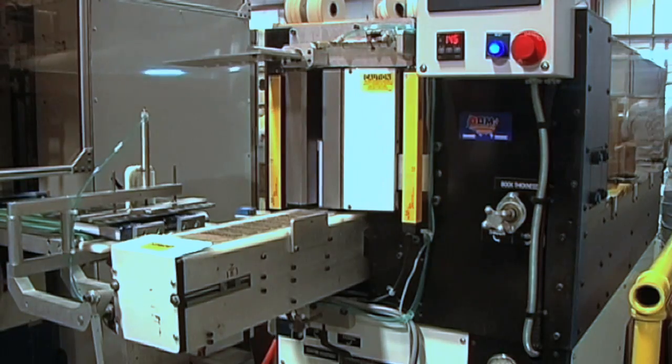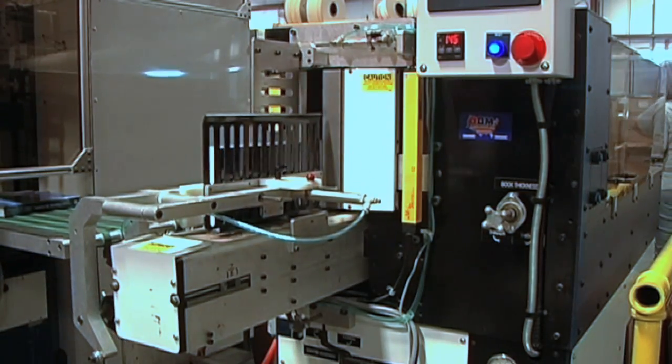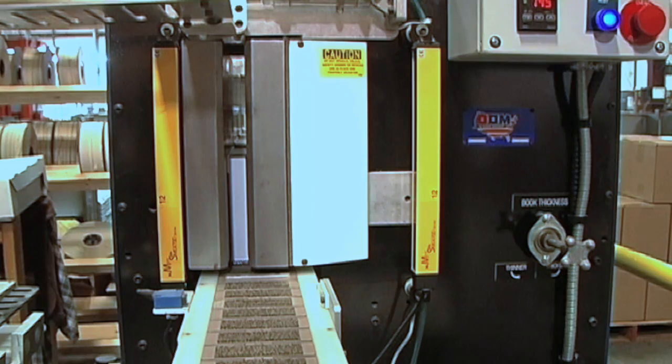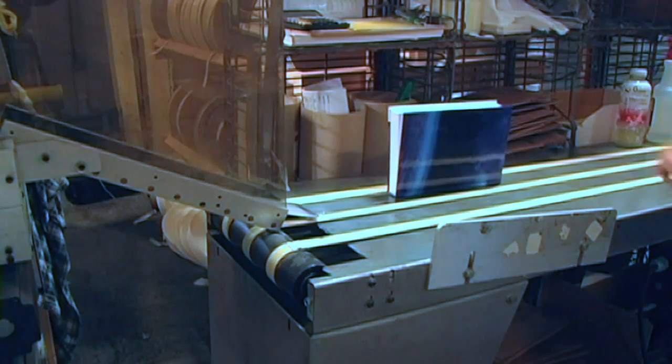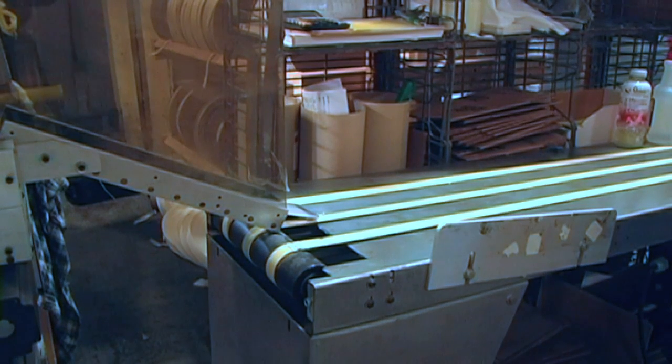Each book travels down a conveyor to the Smashing Station, where 1500 pounds of pressure is applied to the joint area. The finished product emerges where it is checked for quality before being packaged.